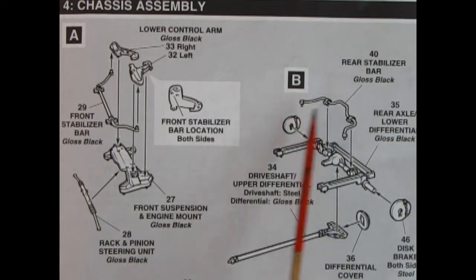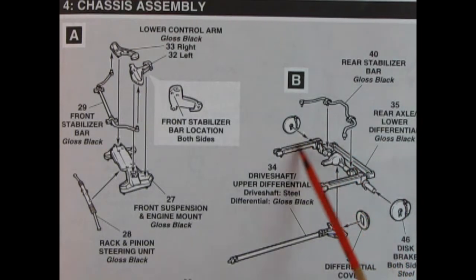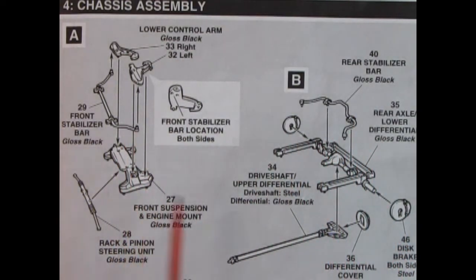Then in panel B we've got our rear stabilizer bar being glued to our differential lower half and then there's the drive shaft, upper differential half which glues in here, and then you cover that up with the differential cover in the back. You've got your disc brakes on both sides so multiple piece suspension units which are really nice.